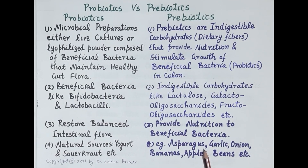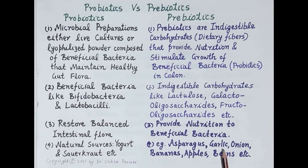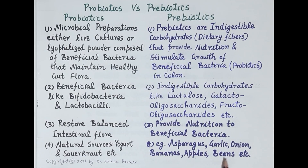Natural sources of probiotics include yogurt and sauerkraut. Natural sources of prebiotics include asparagus, garlic, onion, bananas, apples, and beans.